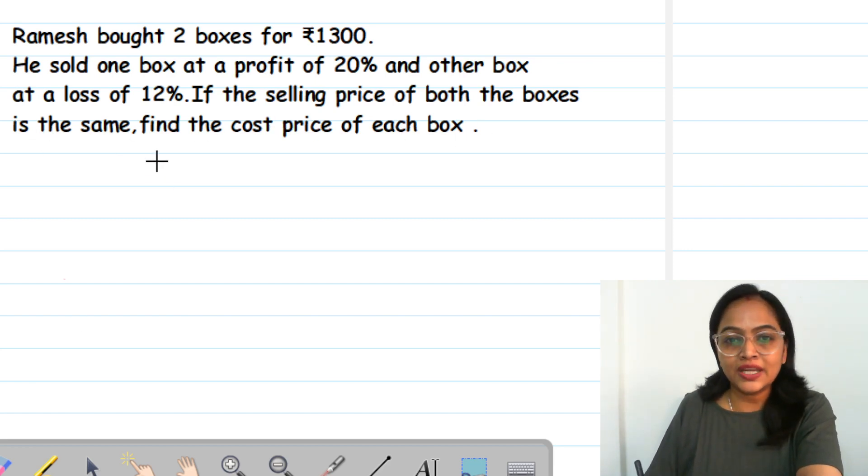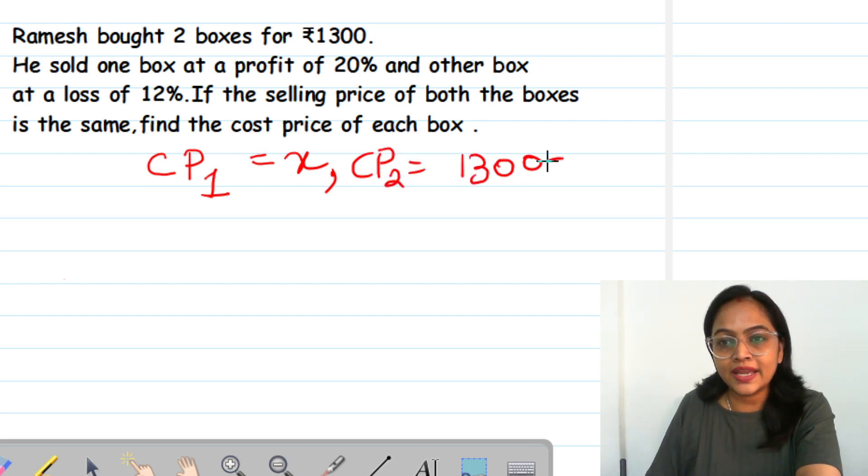Now we can consider the cost price of first box, I will call it as CP1 as X. So CP2 will be 1300 minus X.